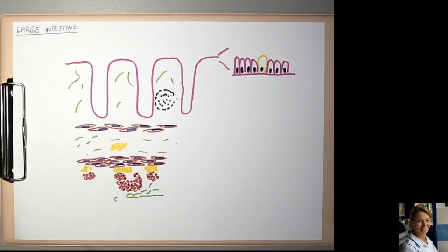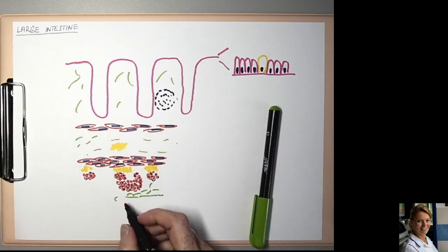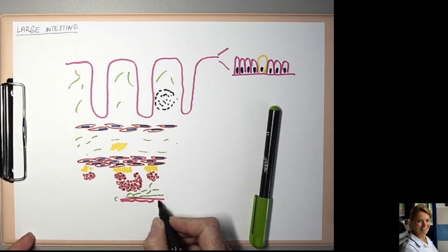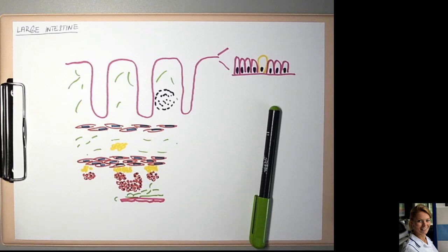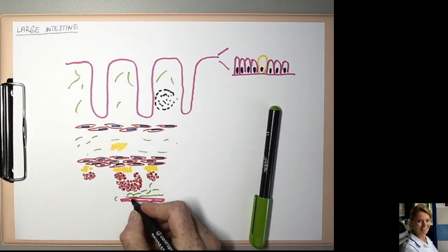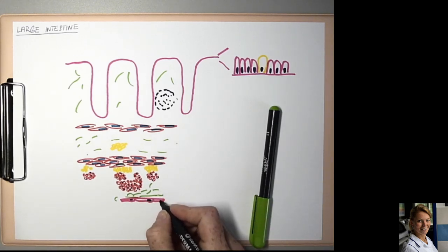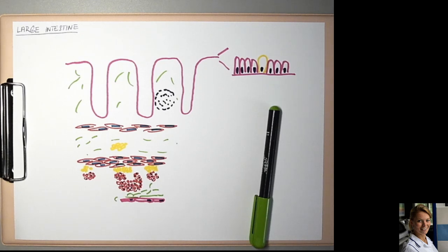This is serosa. One layer of mesothelial cells with flattened nuclei. Serosa covers most of the large intestine.